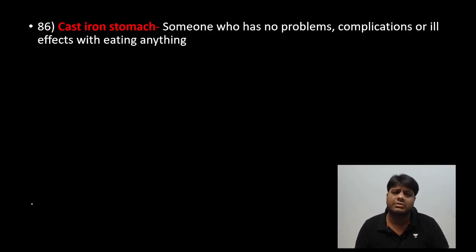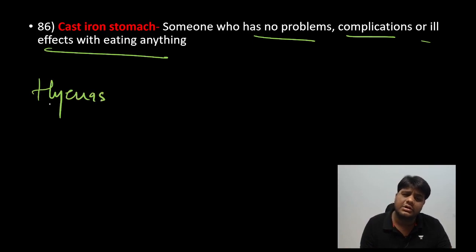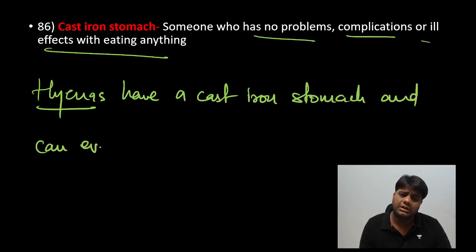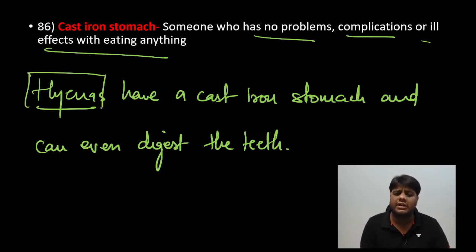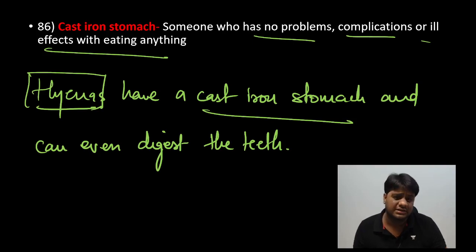Next: 'cast iron stomach.' It means someone who has no problems, complications or ill effects with eating anything. For example: 'Hyenas have a cast iron stomach and can even digest teeth.' Hyenas are natural scavengers — they eat dead bodies and can chew and digest bones, which shows how strong their stomachs are.